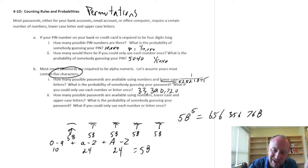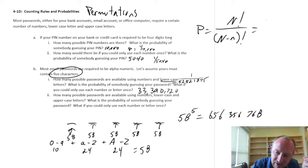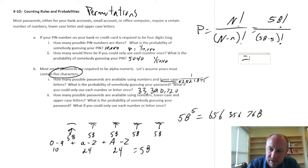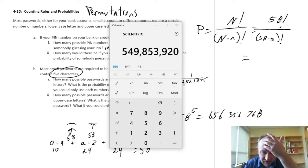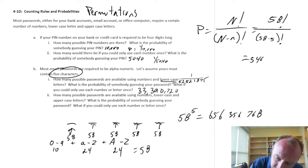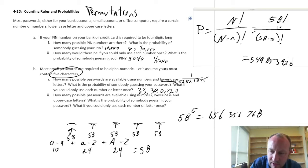Now, again, if I could only use each number once, so now I'm looking at this formula, n factorial, n minus little n factorial. So, here I have 58 factorial, divided by n minus little n, 58 minus 5. Okay, 58 factorial, divided by, open those brackets, 58 minus 5, 5 factorial, equals 5, 49, 5, 49, 8, 53, 9, 20. I'll check just to be sure, good. So, 5, 49, 8, 53, 9, 20.